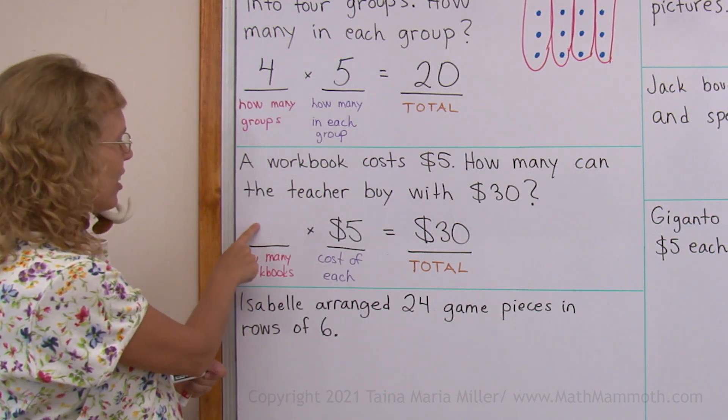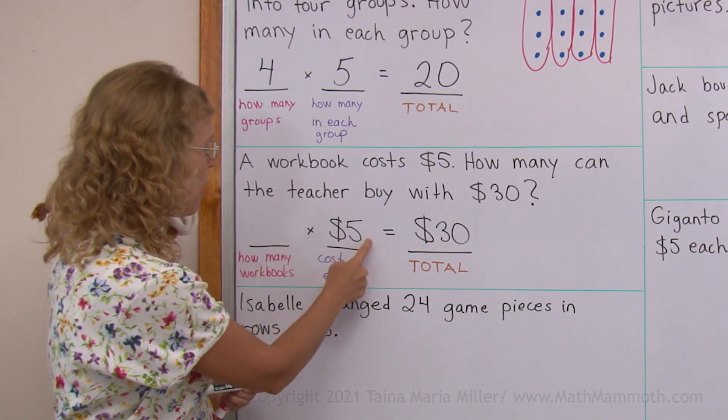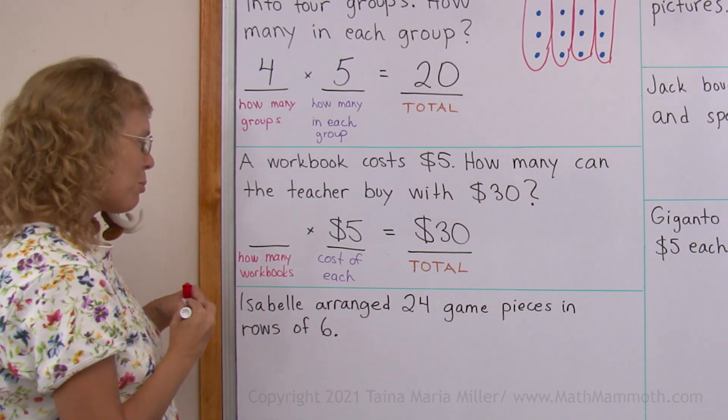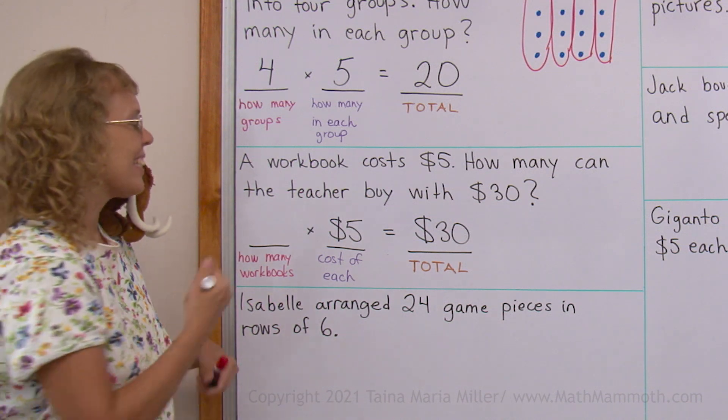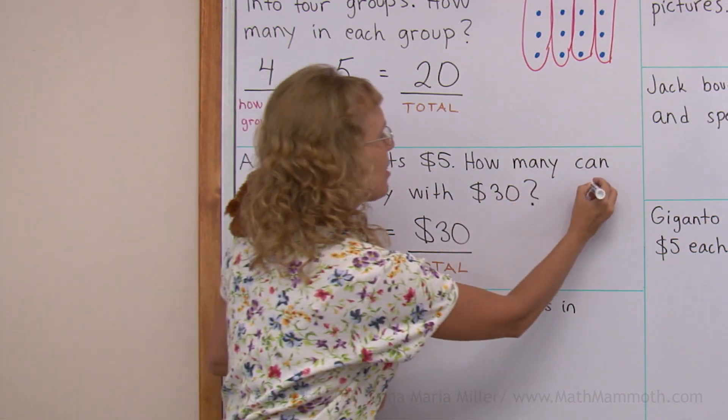And so how many workbooks? You can guess and check. You know, what number would go here? Four perhaps? Four times five? Five, five, five, five would make 20, so that won't work. Five times five? It's six times five. So the answer is six workbooks. Let's write it here too.